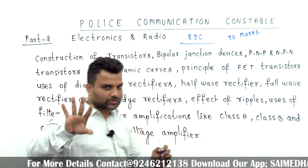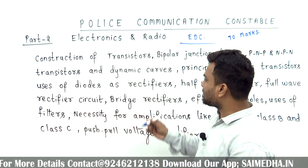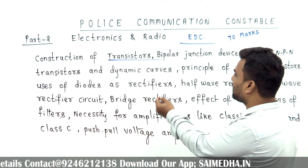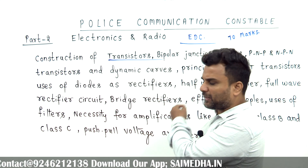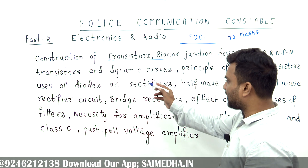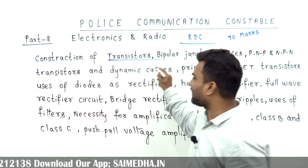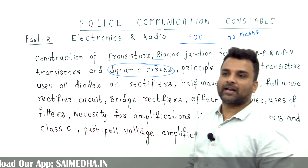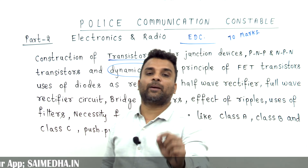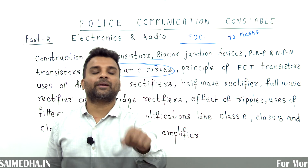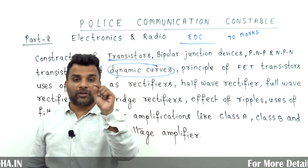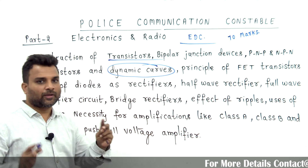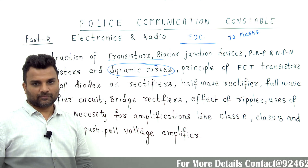Now we have the syllabus. First, there are transistors — construction of transistors, bipolar devices, PNP and NPN transistors, characteristic curves, common base configuration, common emitter configuration, common collector configuration, and input-output characteristics.